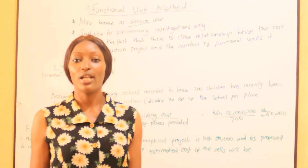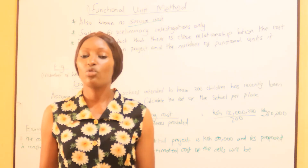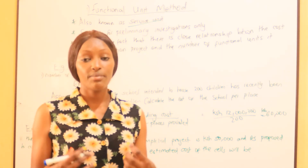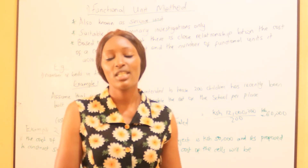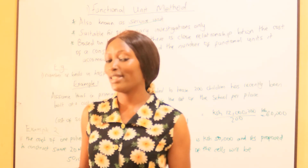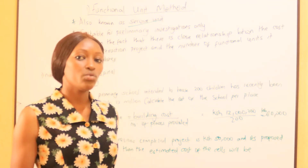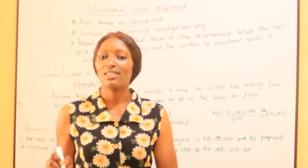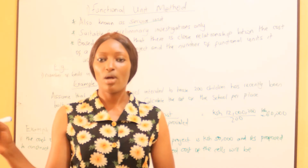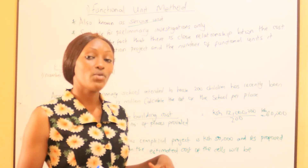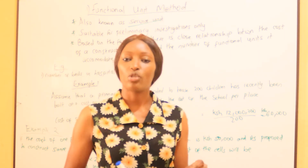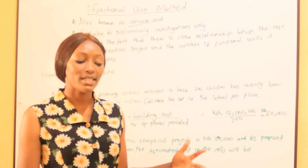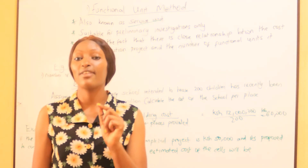For example, a classroom with 20 seats cost 1 million. If we want to build another classroom of the same nature in the same location carrying 40 seats, we take the cost of the 20-seat building — 1 million — and find the cost of one seat: 1 million divided by 20. Then to approximate the 40-seat classroom we take 40 seats and multiply by the cost of one seat. The functional unit method is used in preliminary investigations, when the client has not even started preparing drawings.